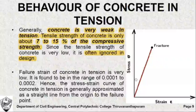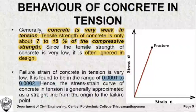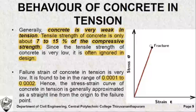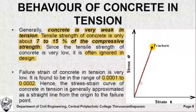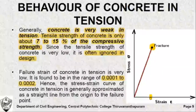The strain at which the concrete fails is very very small — in the range of 0.0001 to 0.0002. This is extremely small and hence the line joining the origin and the fracture point is generally assumed to be a straight line. The strain value is extremely small compared to the failure strain in case of compression.